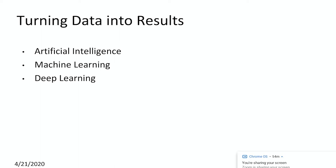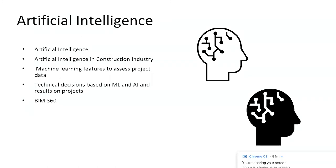Converting data to results goes beyond technical simulation tools. Combining all data into results is based on three familiar concepts: artificial intelligence, machine learning, and deep learning — concepts that are revolutionizing the construction industry.